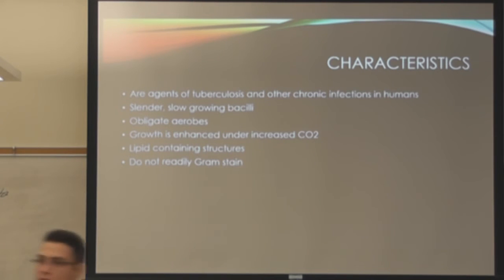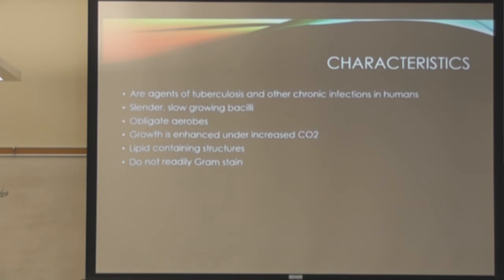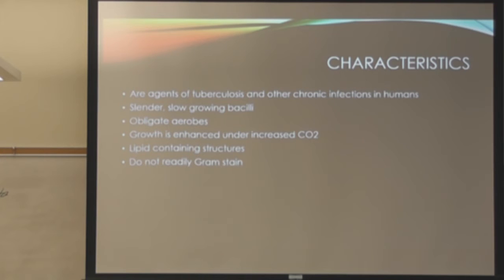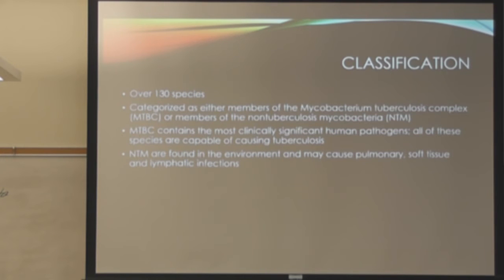These are all slow-growing mycobacteria, and you need enhanced CO2 as well, and lipid-containing structures, so obviously they're not going to Gram stain very well. Your method of choice is going to be acid-fast staining on most of them. There are over 130 species, and they fall into two categories.